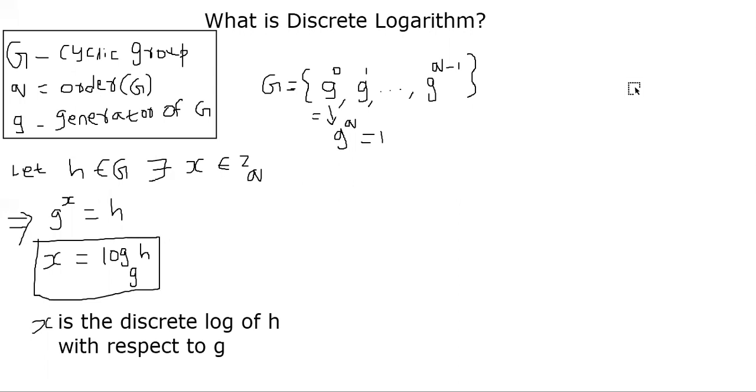Now let's move on to the definition of discrete logarithm. Let's select an element h from the group G. By the definition of cyclic group, we will be able to find an x such that g^x equals h. Since g is a generator of the group, such an x must exist.